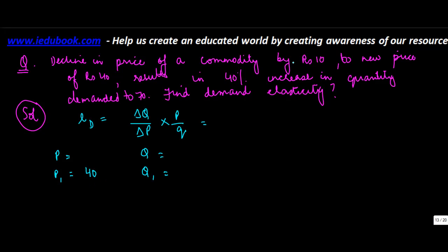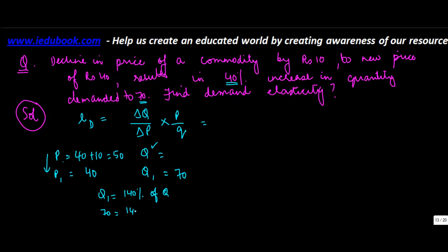There was a decline in price by rupees 10, so the original price is 40 plus 10, which equals 50. The new quantity is 70, and 70 is 40 percent more than the original quantity. So Q1 is equal to 140 percent of Q, meaning 70 equals 140 upon 100 into Q, which gives Q equal to 70 into 100 upon 140, so Q equals 50.